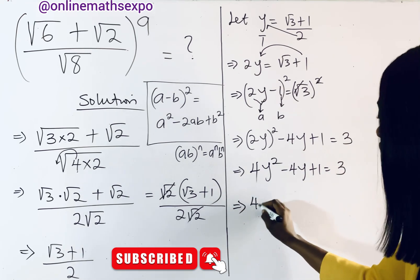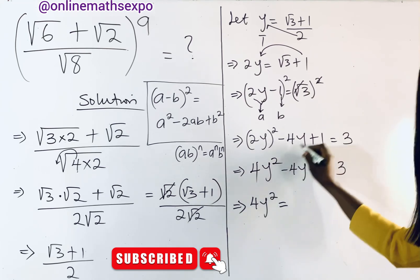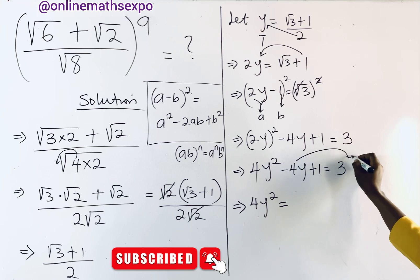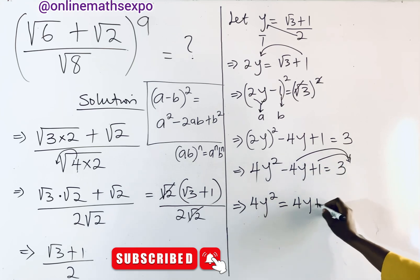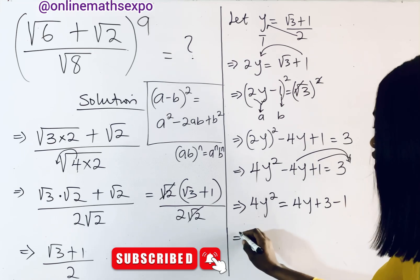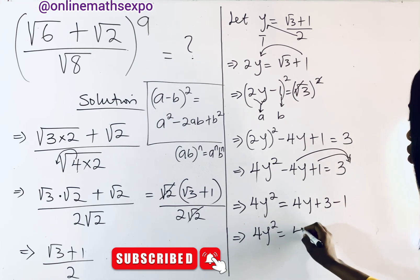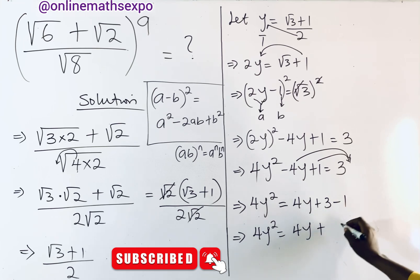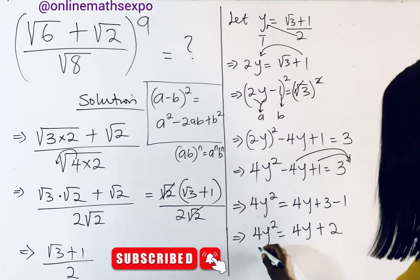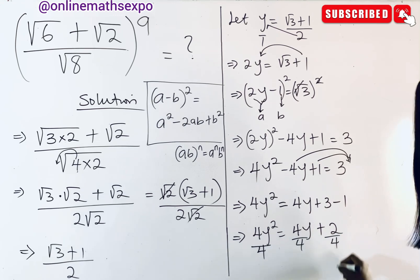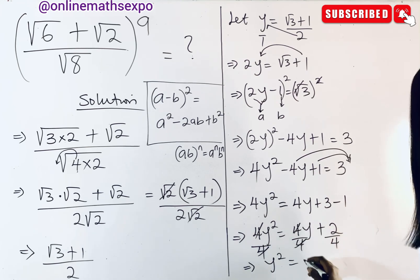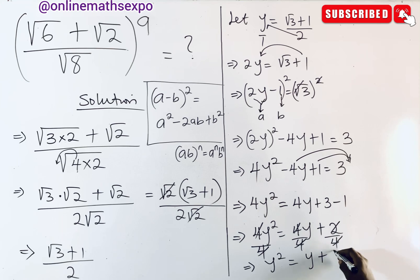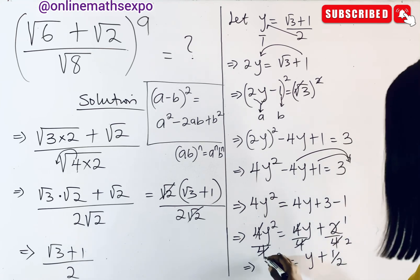Rearranging, 4y² equals 4y plus 2. Dividing each term by 4 gives us y² equals y plus one half. This is a key result we will use throughout the rest of the simplification.